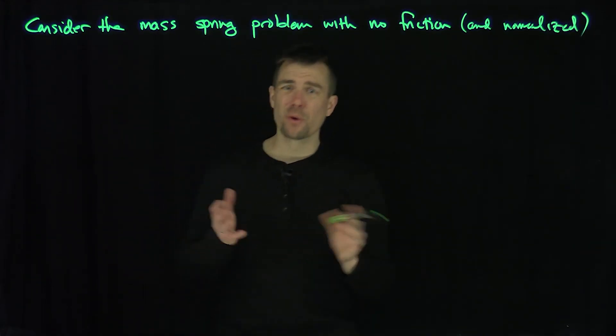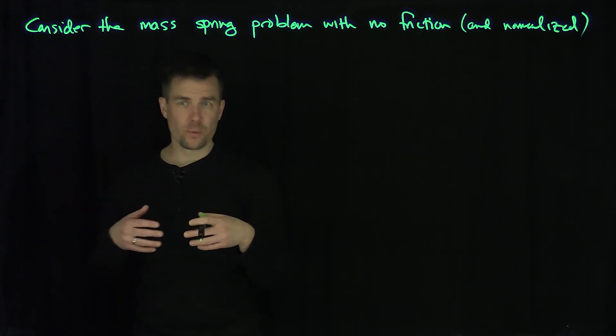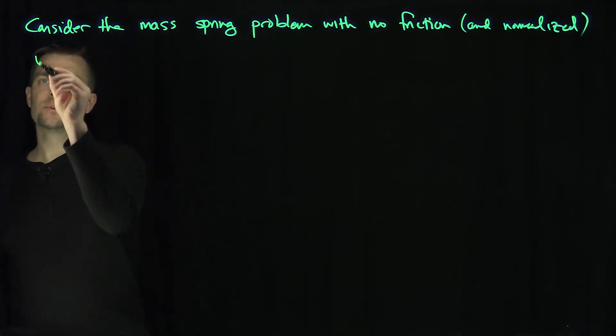In other words, I'm going to assume the mass and the spring constant are both equal to 1 on this problem just for simplicity. Otherwise, you're going to get factors of k over m everywhere, square root of k over m, it just makes things a mess, right? And so here's our mass spring system.